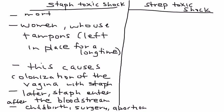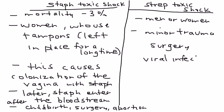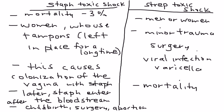The mortality of Staph Toxic Shock hovers around 3% or so. Strep Toxic Shock can happen in men or women, and occurs after minor trauma or surgery. Certain viral infections can also be risk factors, such as varicella. The key difference is that Strep Toxic Shock is much more severe — the mortality is as high as 60%.